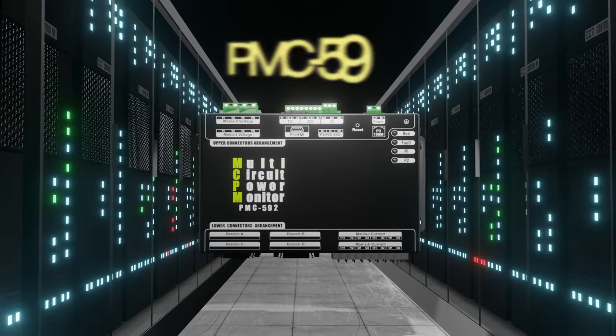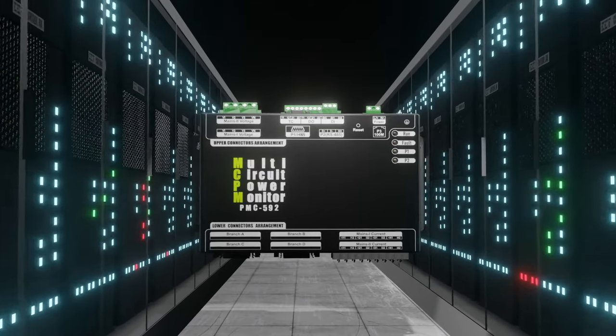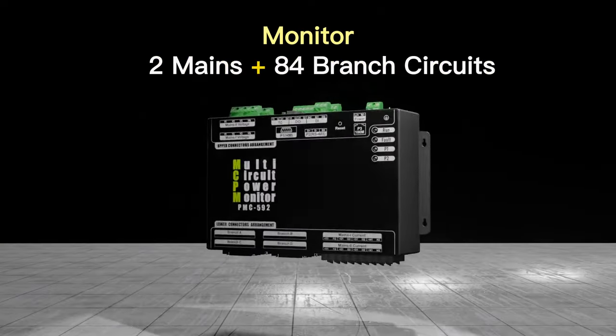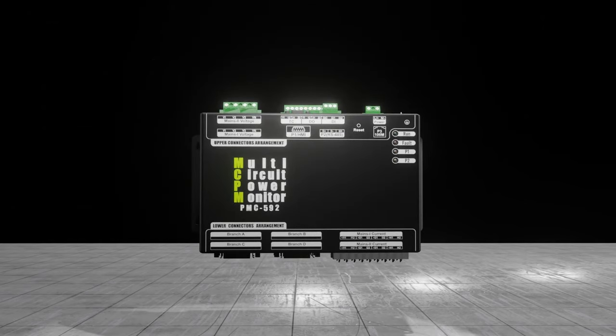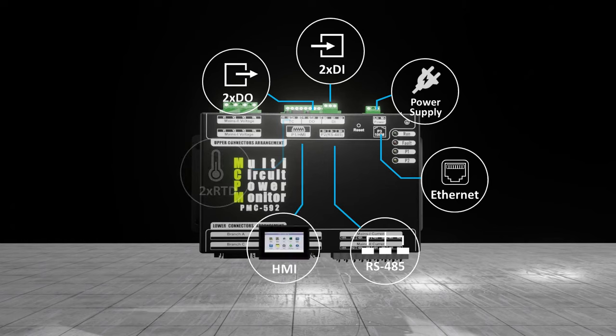The PMC592 is a multi-circuit monitor which can monitor two main circuits and up to 84 branch circuits. It provides digital I/O for status monitoring, control, alarming, as well as temperature monitoring. These signals can be easily integrated into BAS for building automation via the RS-485 or Ethernet port.